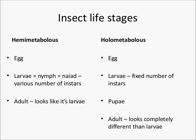Hemimetabolous insects have an egg, a larval stage, and an adult stage, and the adult generally looks much like its larval stage with wings. Holometabolous insects have an egg stage, a larval stage with a fixed number of instars — usually four or five — a pupal stage, and an adult stage where adults are completely morphologically different from their larvae. The big advantage this gives holometabolous insects is that adults and pupae rarely, if almost never, compete with their own larvae for resources, whereas in hemimetabolous insects the adults sometimes do compete with their own larvae.